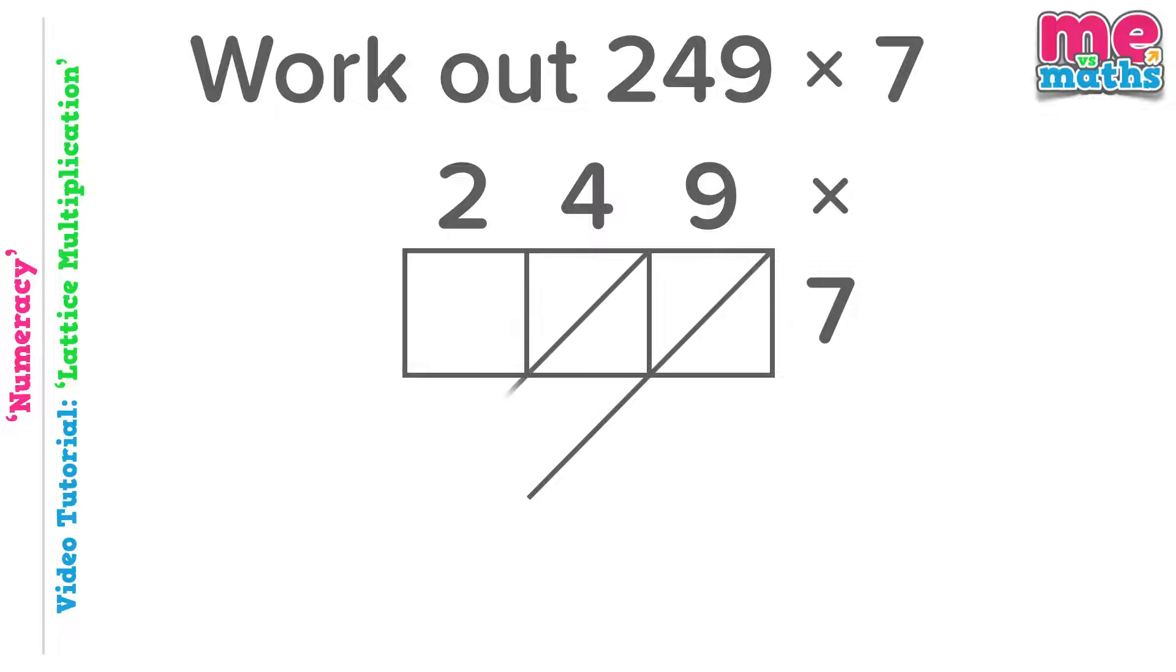So the first square, the second square and the final square all split into 2 with those diagonal lines. Again we've drawn our grid, we're now ready to multiply. Starting with 9 times 7 then, that's 63, so 6 tens and 3 units. 4 times 7 next is 28, so 2 tens and 8 units. And finally 2 times 7 is 14, so a 1 and a 4.